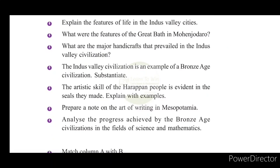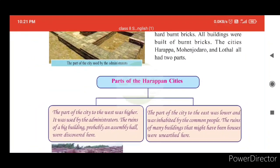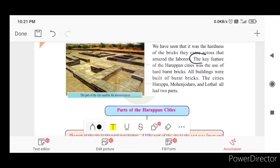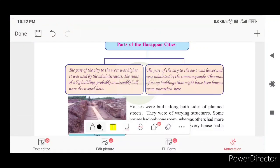Explain the features of life in the Indus Valley cities. The key feature of Harappan cities was the use of hard burnt bricks. All buildings were built of burnt bricks. The cities — Mohenjo-daro, Harappa, and Lothal — had two parts. The part of the city to the west was higher, and the part to the east was lower.